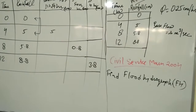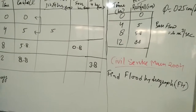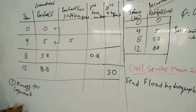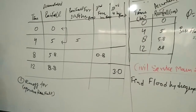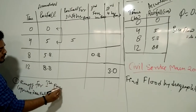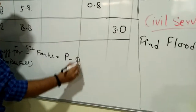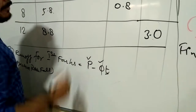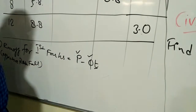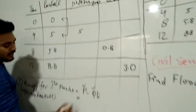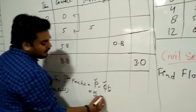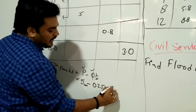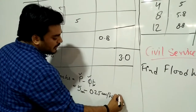We have to calculate runoff for the first four hours. Runoff, also known as effective rainfall, for the first four hours is calculated by the simple formula P minus φ·t, where P is precipitation, φ is the phi index (infiltration capacity), and t is the time interval. The precipitation for the first four hours is 5 centimeters, and the phi value given is 0.25 centimeter per hour, with a time interval of 4 hours.